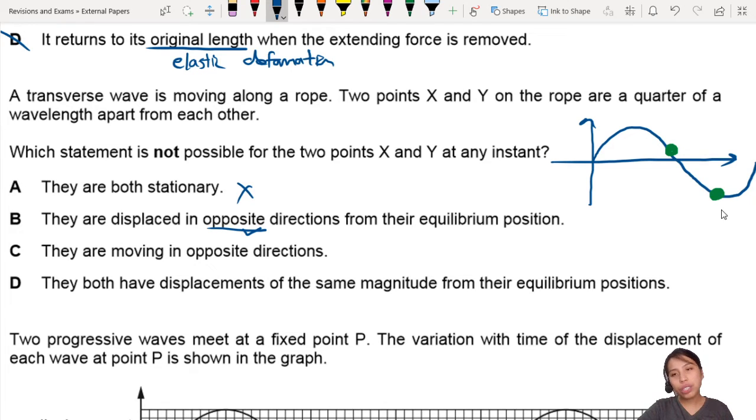So B is possible - they can be in opposite directions at certain times. See, they are moving in opposite directions. One way would be having one particle here and the other particle here, a quarter of a wavelength apart. If I were to draw the velocity vectors of this one, imagine the wave is moving to the right.